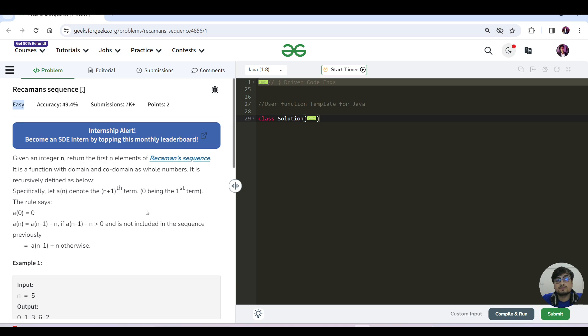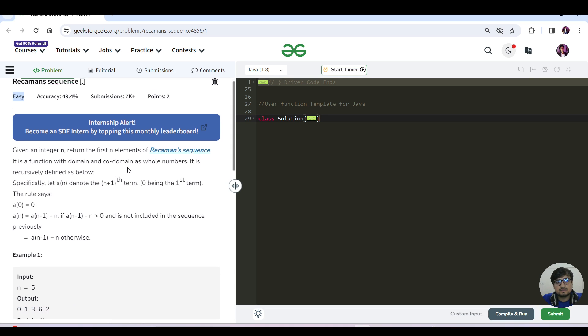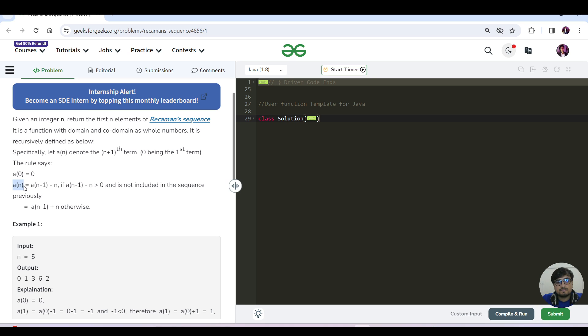It's an easy level problem. Given an integer n, return the first element of Recaman's sequence. The Recaman sequence represents the nth term because I am using zero-based indexing to consider.